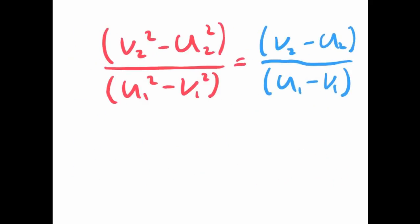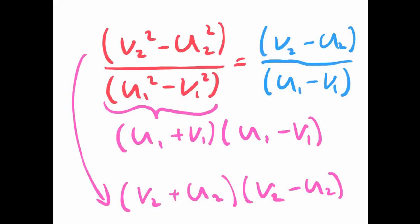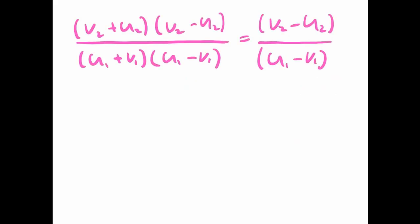So, we know that these two things are equal. And now I'm just going to simplify U1 squared minus V1 squared. That's the same as saying U1 plus V1, all in brackets, multiplied by in brackets, U1 minus V1. And same with the top there, V2 squared minus U2 squared. Well, that's the same as saying V2 plus U2, all in brackets, multiplied by V2 minus U2, all in brackets.